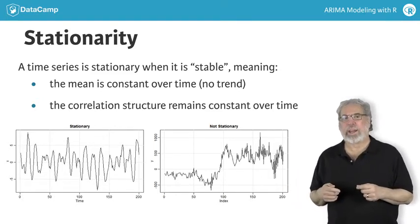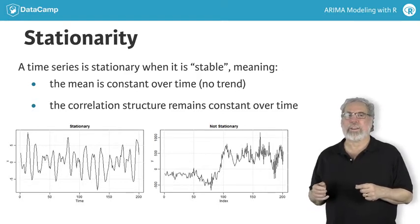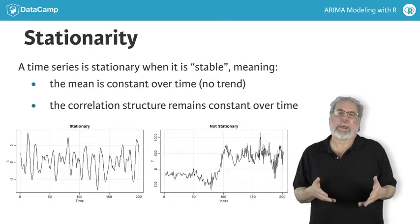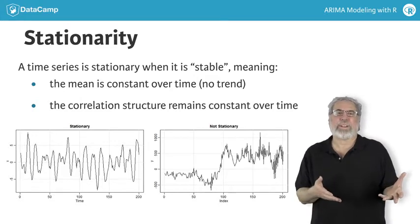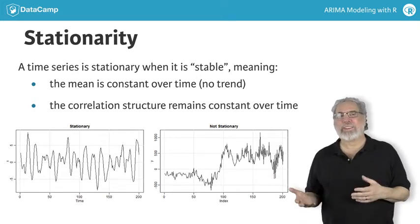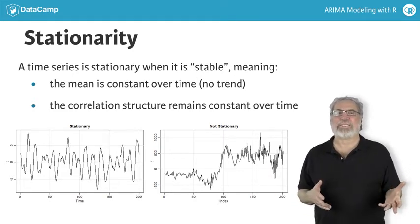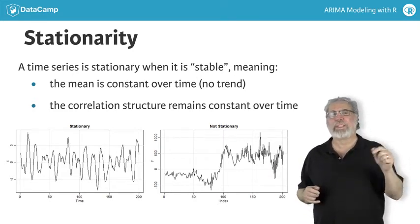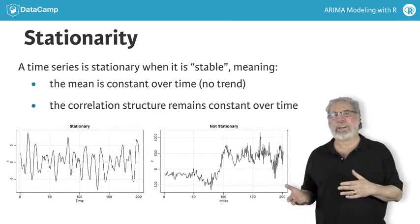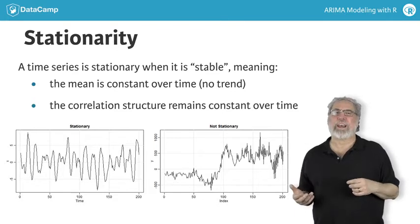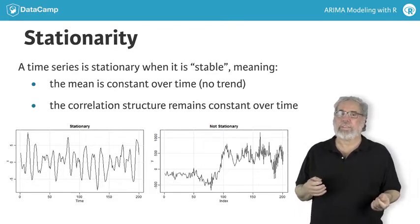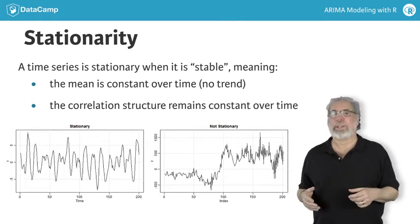The left-hand plot is stationary: there's no trend, and the time series behaves the same, for example, between the first 50 points and the second 50 points. On the other hand, the plot on the right looks very different between time point 1 to 50 and 150 to 200. The means in these time intervals are different, as is the variability, with the end of the series being more variable than the beginning.